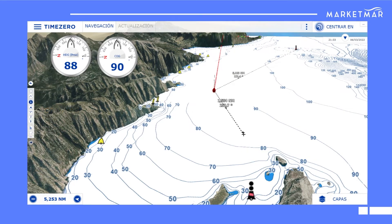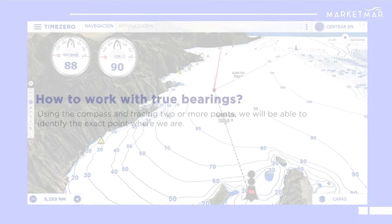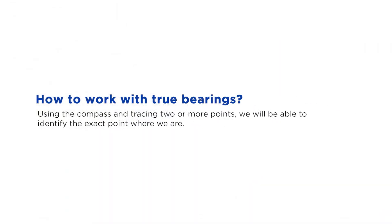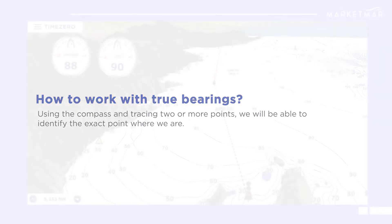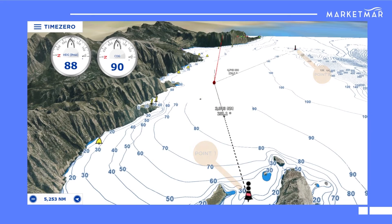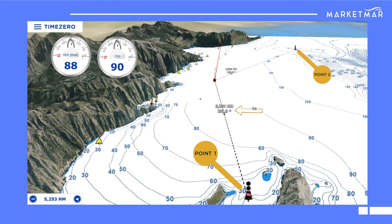The next concept that we can observe with our compass is the true bearing. By locating two or more bearings from our boat at the same time, we'll be able to identify where we are without the need of a GPS. If we point our compass to a point or a specific light on the coast, the compass will show an angle expressed in degrees between the point and north.